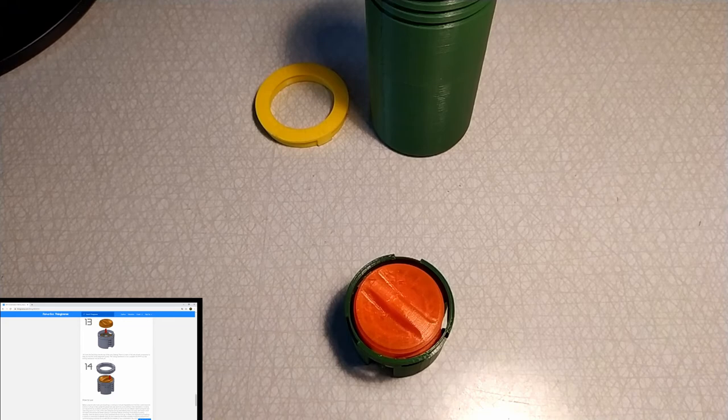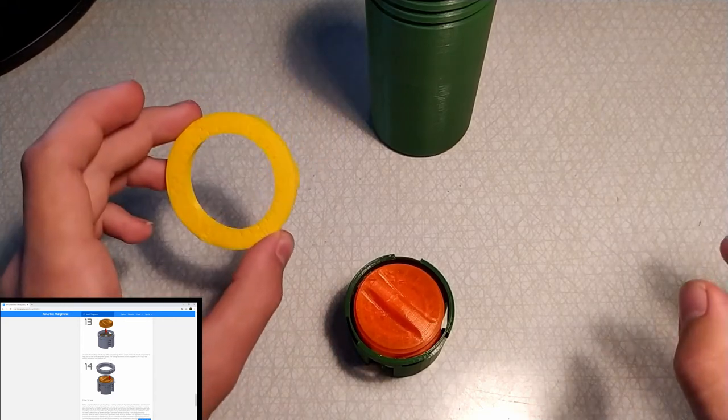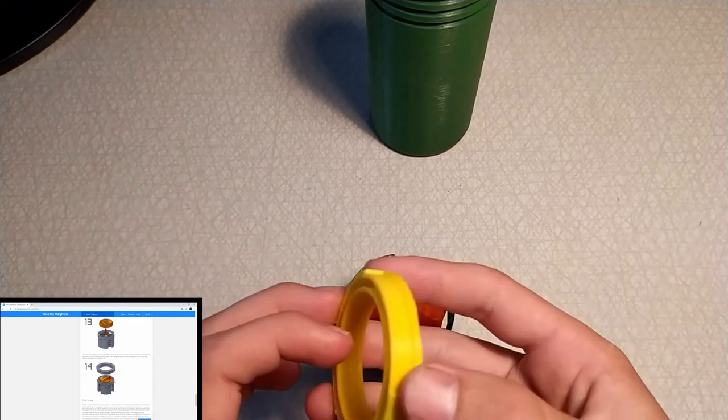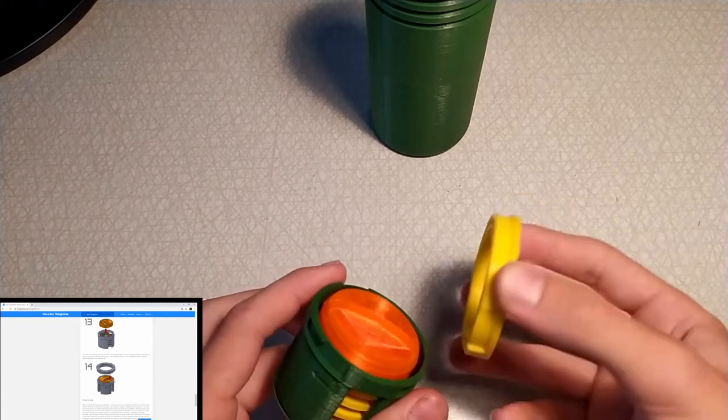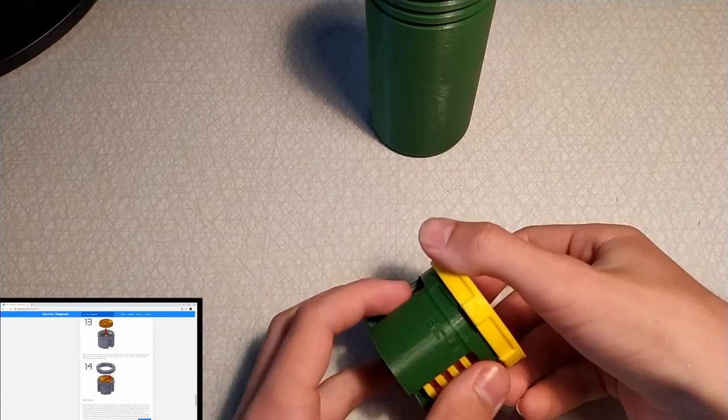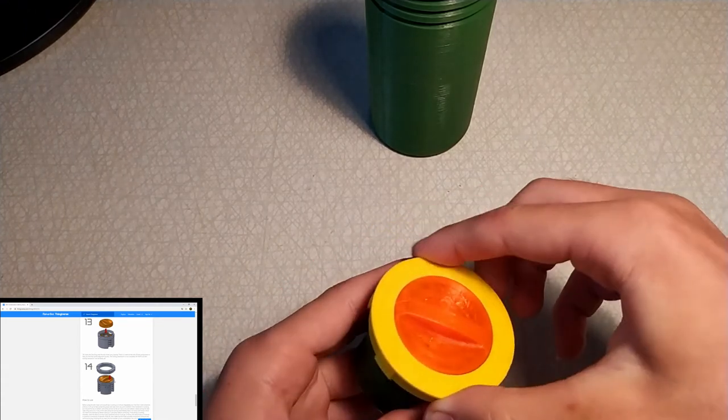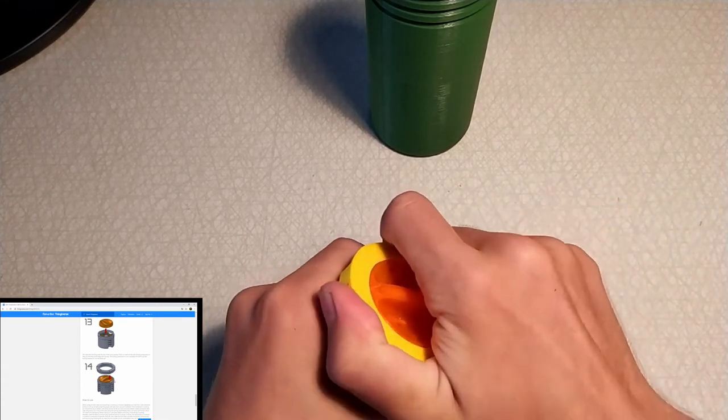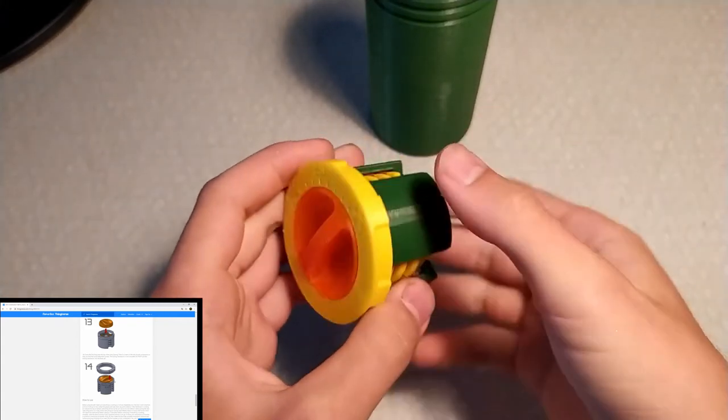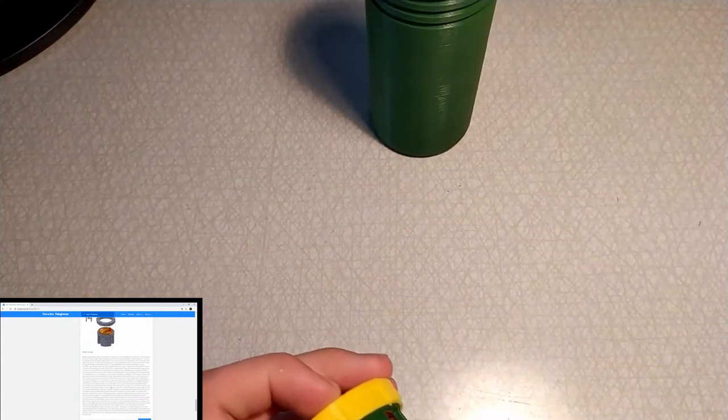And then for the last part of this assembly, we take this ring, slot it in, merge up with the two holes, like that, and then twist and lock, and that's the assembly complete down here.